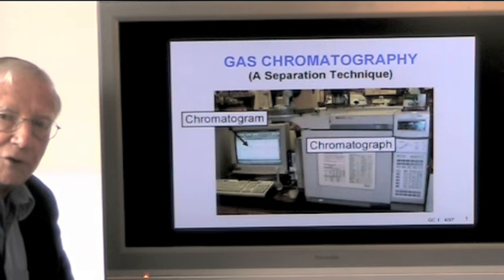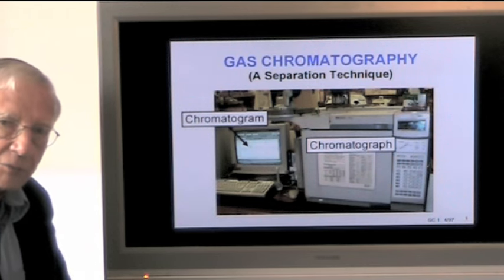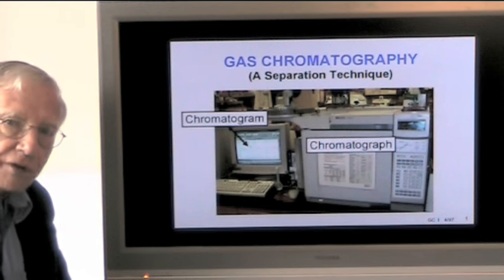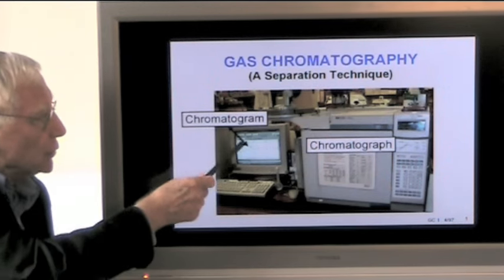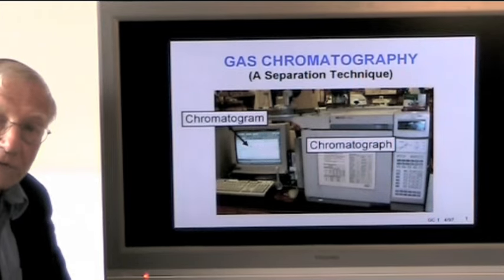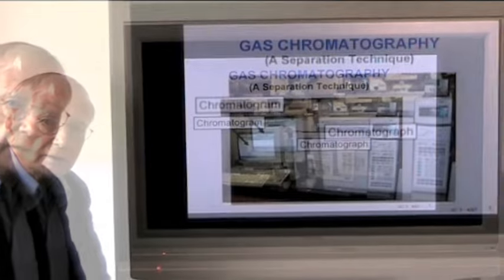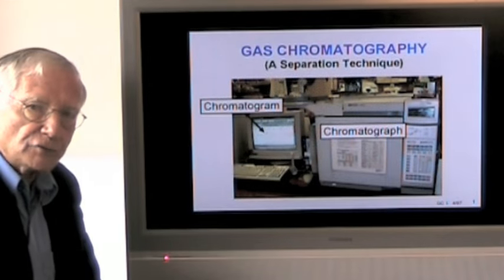This machine, by using an injection port, a column detector, generates a written record of the analysis, a series of peaks. And those series of peaks are called a chromatogram. A chromatogram is simply a written record of the analysis performed by the gas chromatograph.